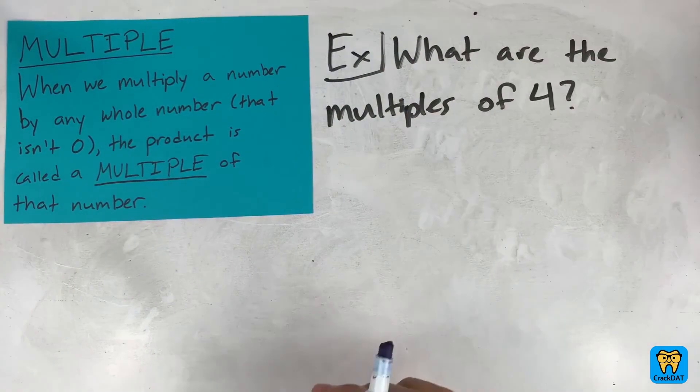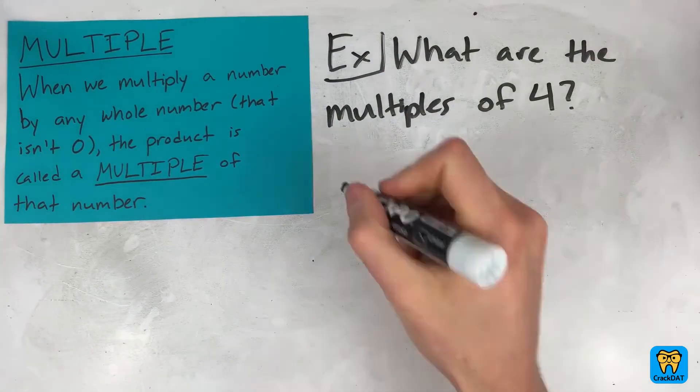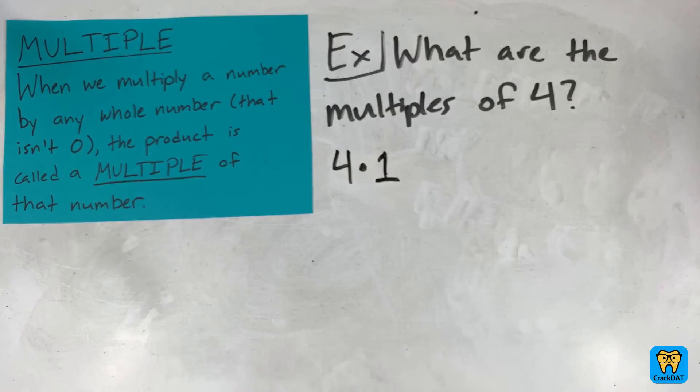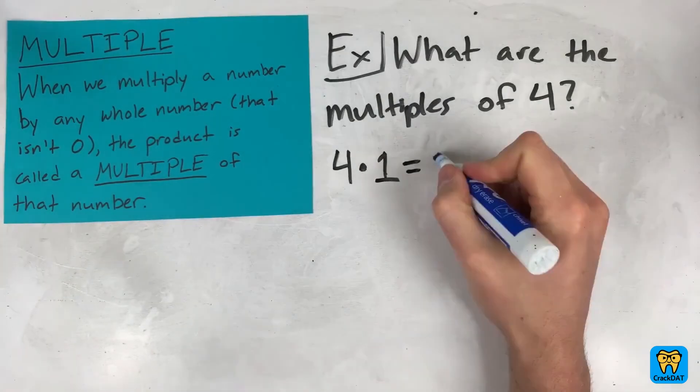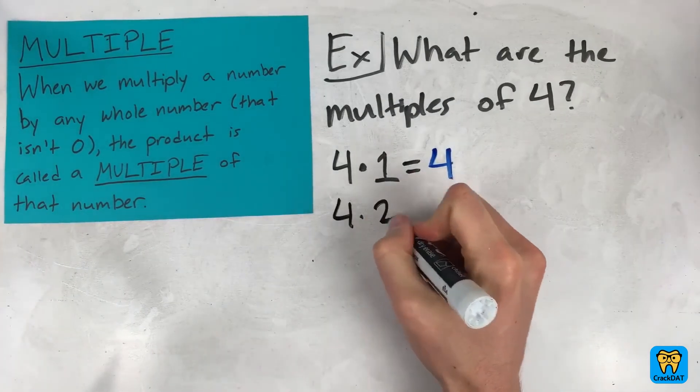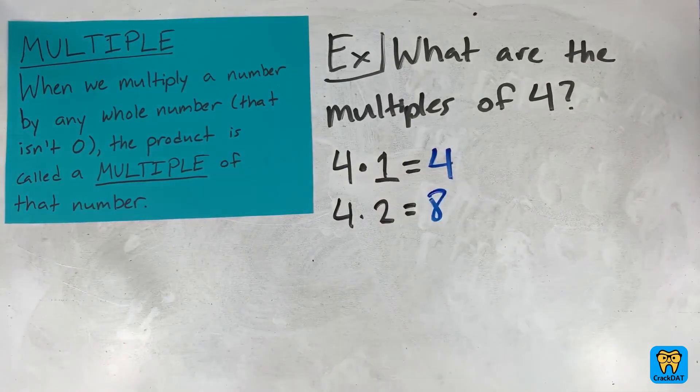Let's list the multiples of four. Well, a multiple of four is just four times anything. So we could do four times one, which equals four. So four is a multiple of four. Or we could do four times two equals eight. So eight is a multiple of four. Or we could do four times...